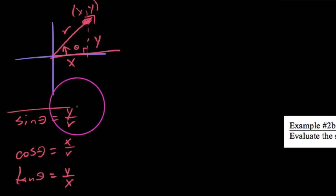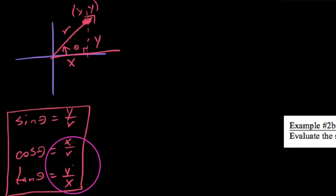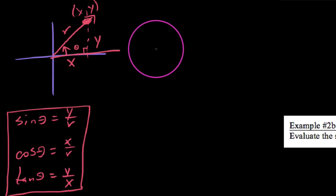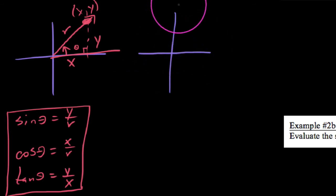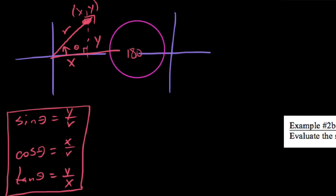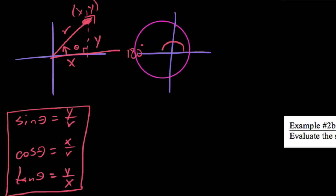I'm only going to list out these three, because the other three trig functions are just the reciprocals of those. The question we're posing in this video is: what if I have an angle like 180 degrees that actually falls on one of the axes?